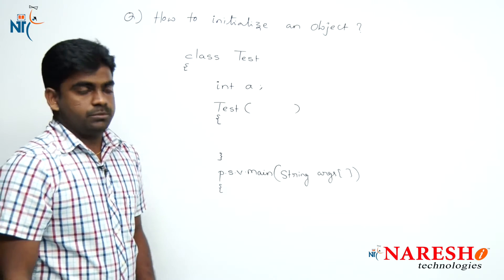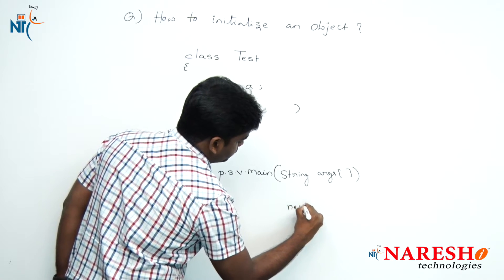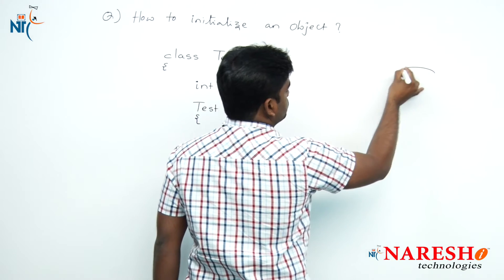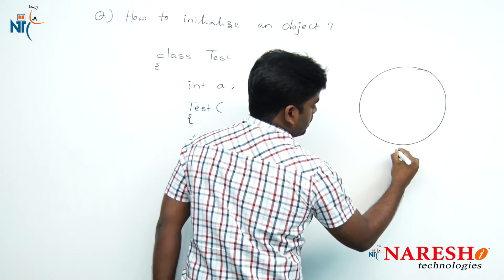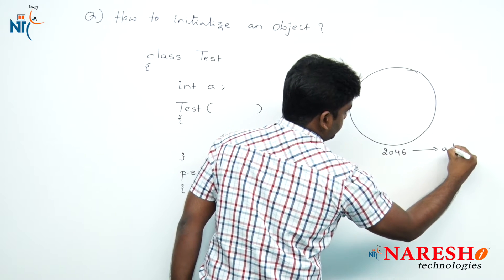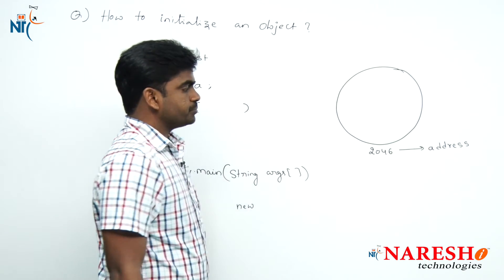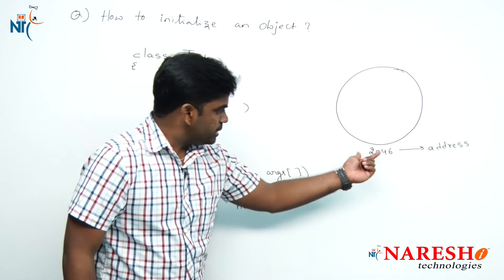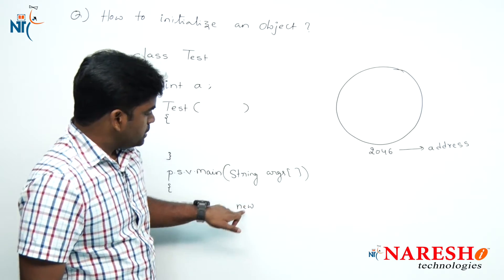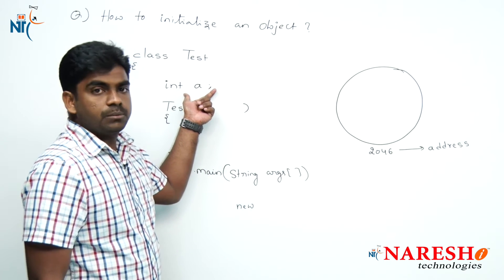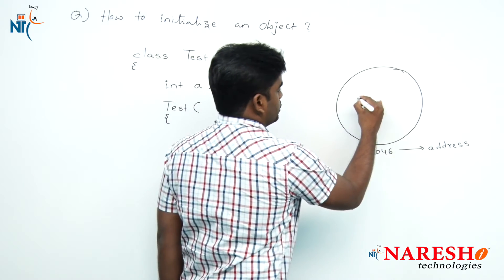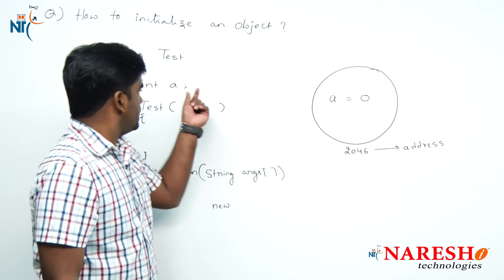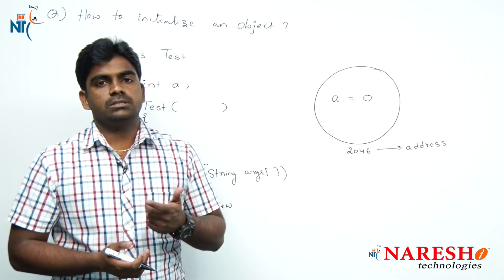Now I want to create an object. Whenever the new keyword executes, first of all, in the heap memory an object will be created at some location. This address — the memory address of an object — is always a positive integer value, not only in Java but in any programming language. For example, I am considering 2046. As soon as the object is created, all non-static variables get memory allocation inside the object and initialize with a default value of 0, because 'a' is an integer.